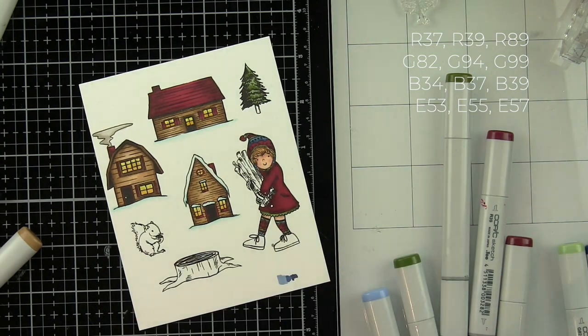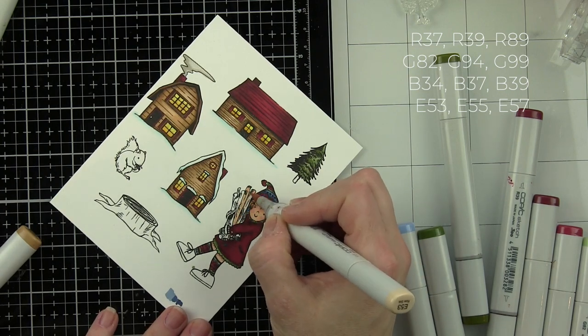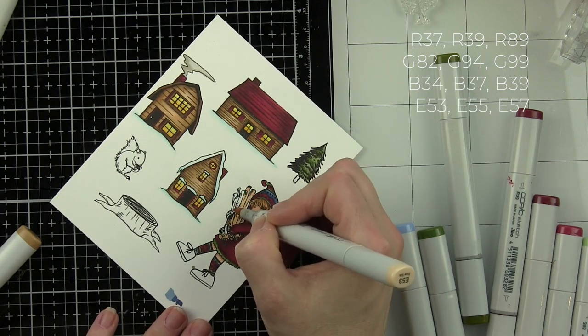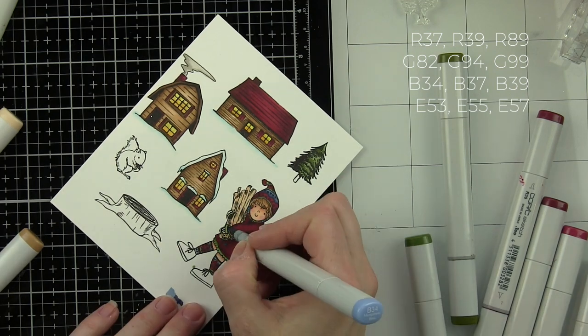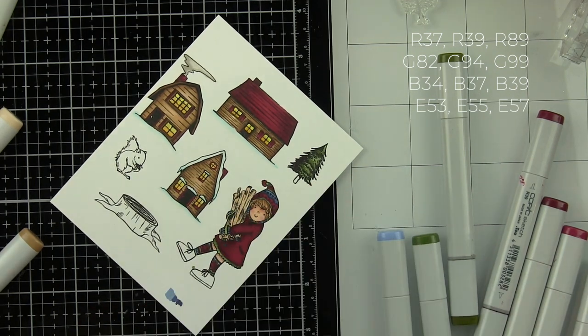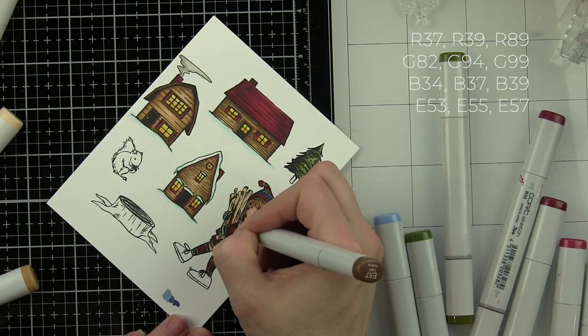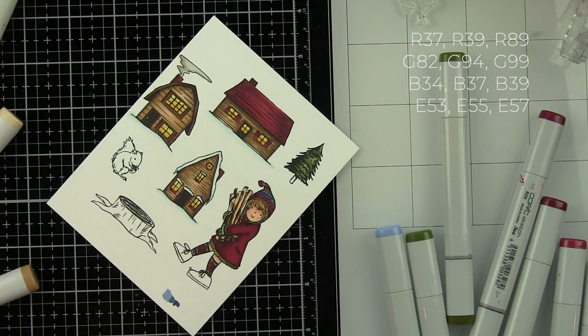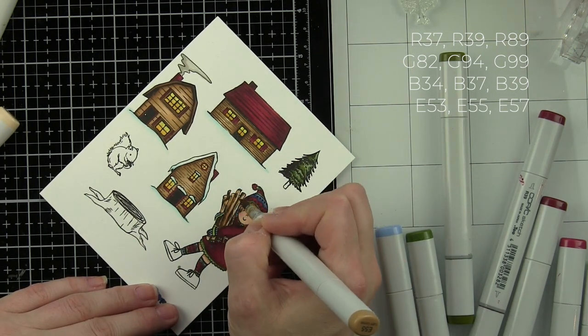So let's color in the firewood in her arms. For this, again, E53, 55, and 57. I'm not going to do as much blending as I did for the houses. I want to leave some dark areas in this much like actual wood would have, so any of those dark areas from the stamped image, I'm going to keep the color darker there with E57.